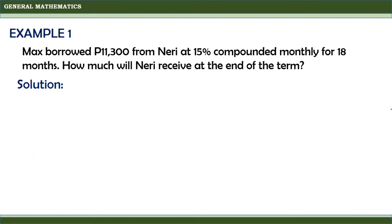For the first problem: Max borrowed 11,300 pesos from Neri at 15% compounded monthly for 18 months. How much will Neri receive at the end of the term? Since we are asked how much Neri will receive at the end of the term, we need to look for F, the future value.